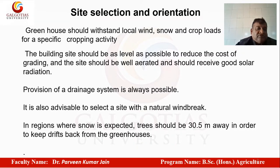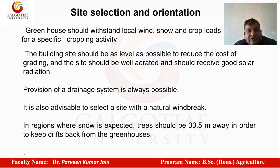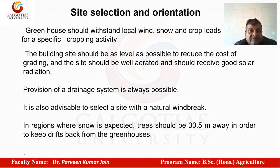From the site selection and orientation point of view, the greenhouse should withstand local wind, snow, and crop loads for a specific cropping activity. The structure should be steady enough to withstand wind velocities and snowfall weight. Crop load refers to when you tie crop plants like runners to the structure and there is simultaneous fruiting on say 500 to 1000 plants — the structure should bear that load.